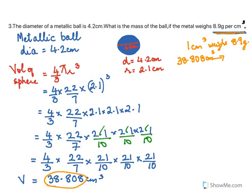So I think we have got it by now. If one centimeter cube weighs 8.9, this centimeter cube will weigh 38.808 into 8.9.